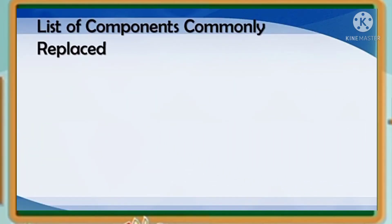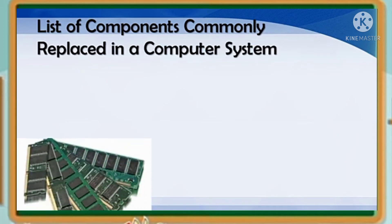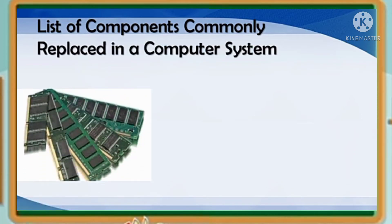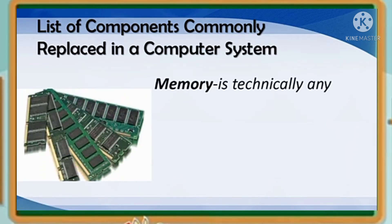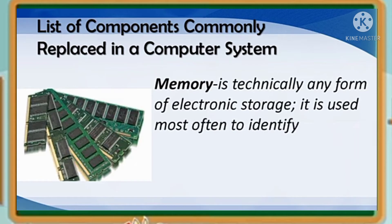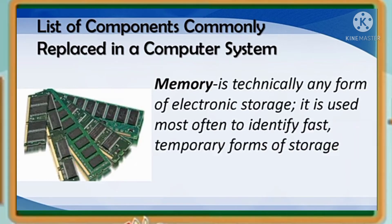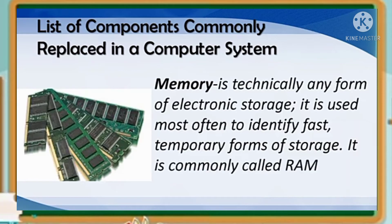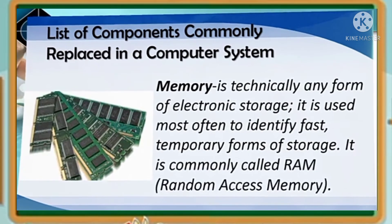Here are components commonly replaced in a computer system. We have the memory — it is technically any form of electronic storage. It is used most often to identify fast, temporary forms of storage. It is commonly called RAM, or Random Access Memory.